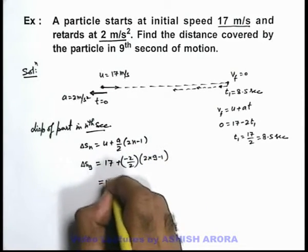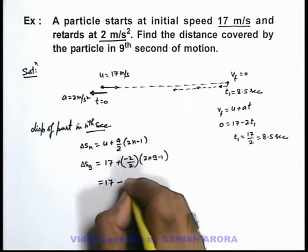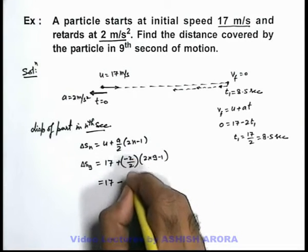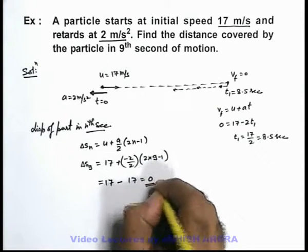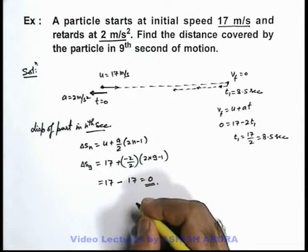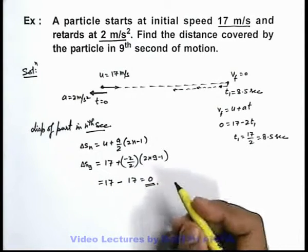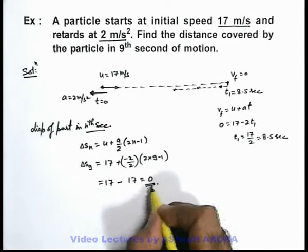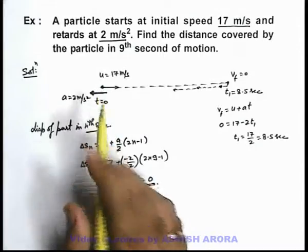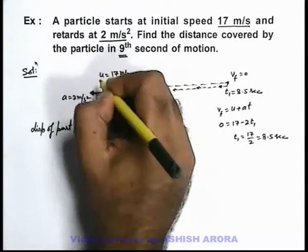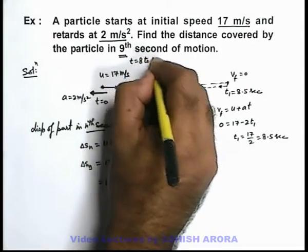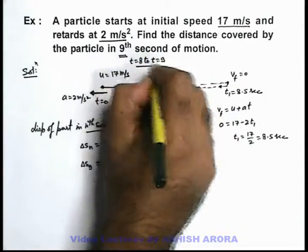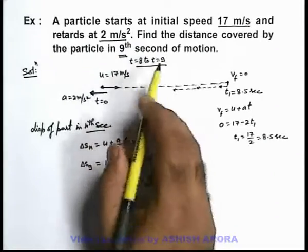This gives us 17 minus 17, which equals zero. This is quite a surprising result. How is it possible that displacement becomes zero? Yes, it is possible because we are analyzing the motion in the ninth second.